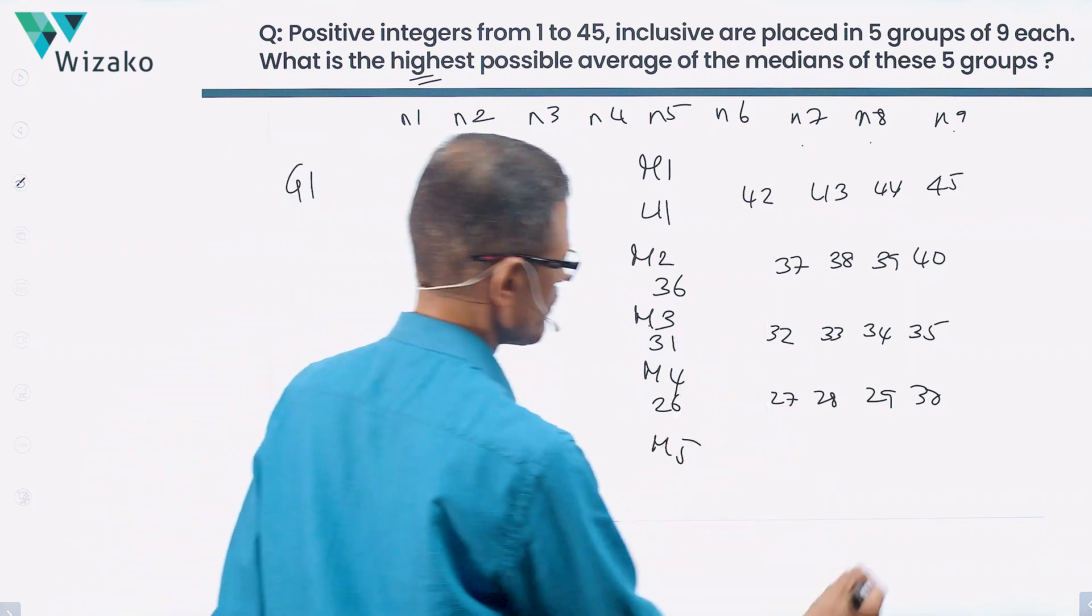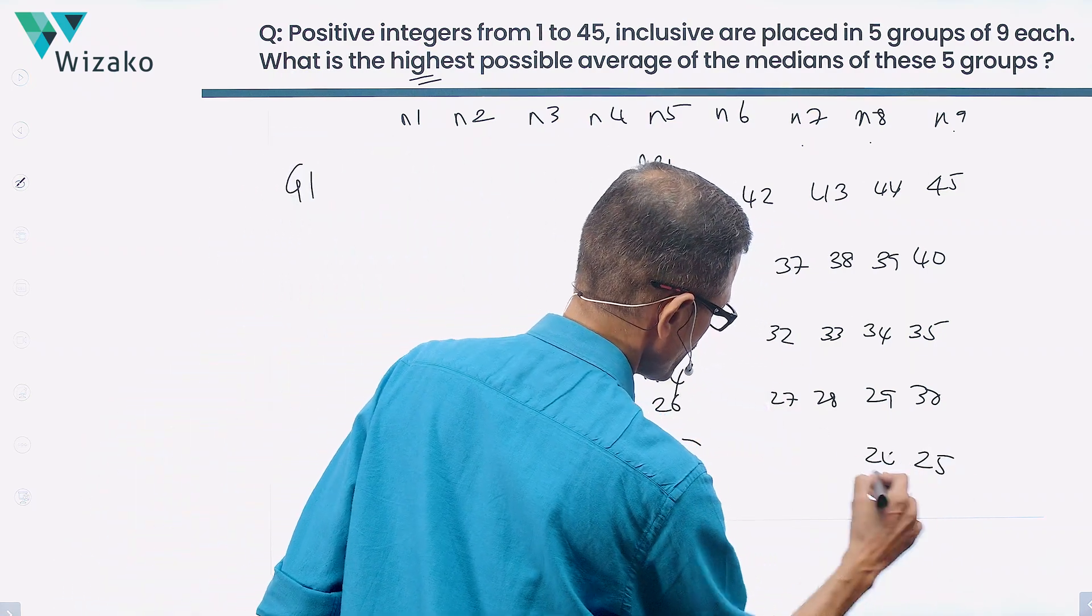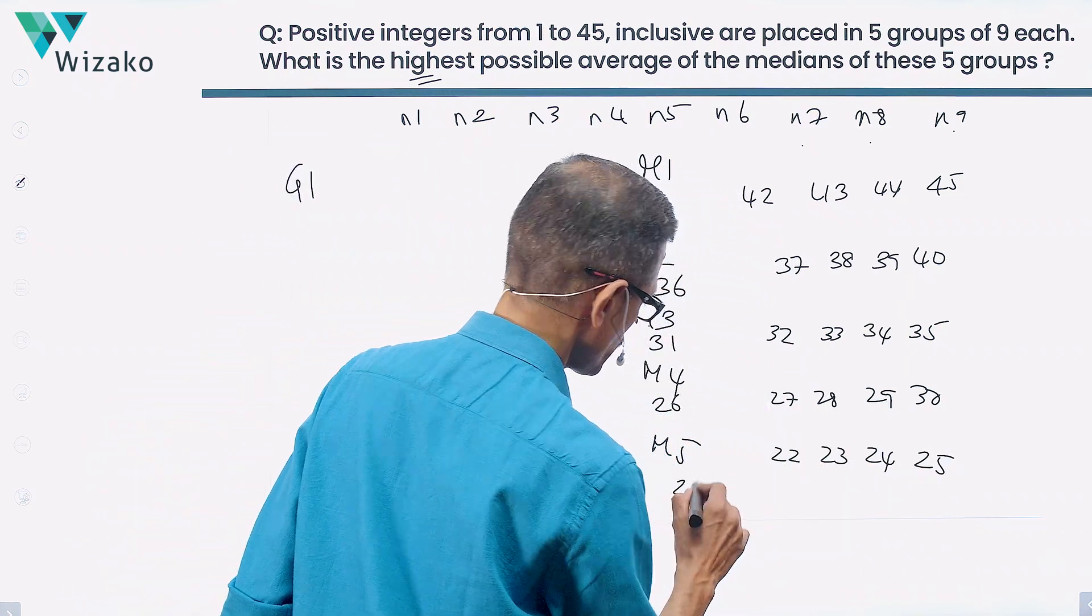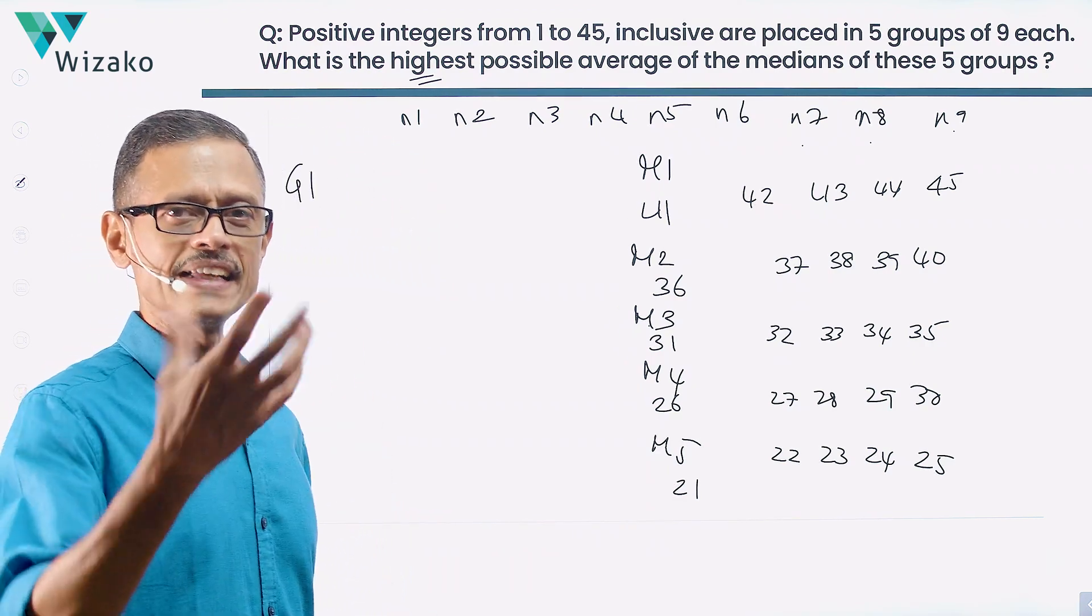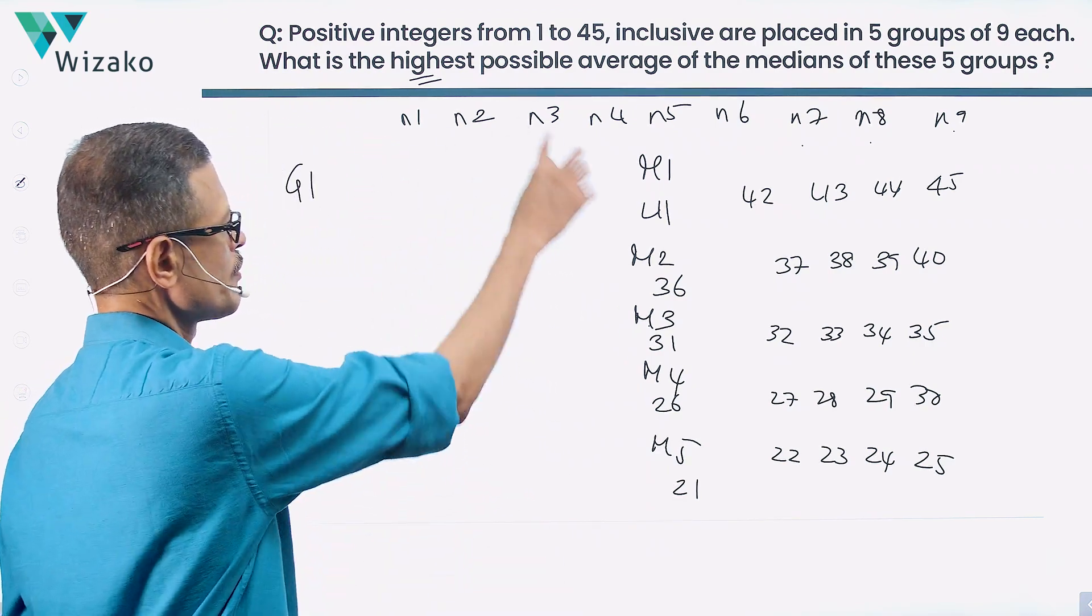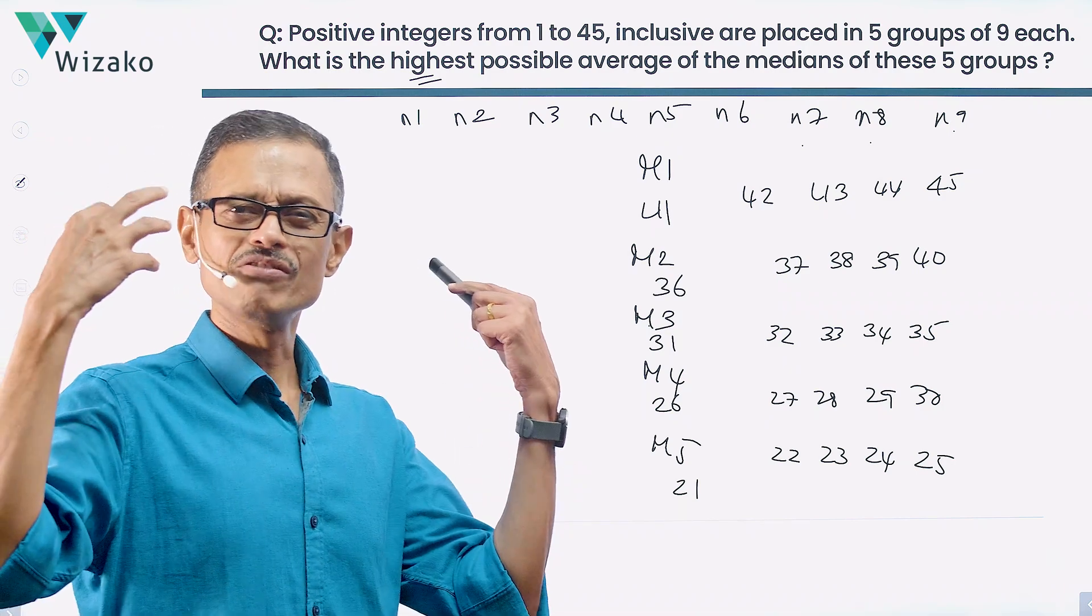The last one, we have first 25 numbers left. 25, 24, 23, 22, 21. Now, how many numbers are we left? We're left with 20 numbers. We'll have to break them into groups of five for the first four values. Place them whichever way you want.